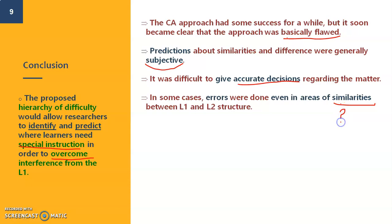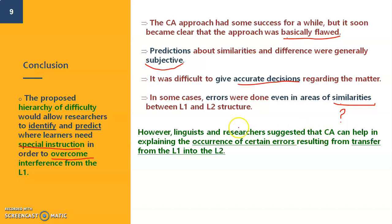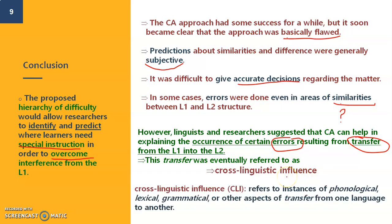However, linguists and researchers suggested that CA actually has an advantage in helping explain the occurrence of certain errors resulting from a transfer from L1 to L2. This transfer, which you have encountered before, was given a different name later: cross-linguistic influence, which means instances, moments of phonological (that is maybe in pronunciation), lexical (the words used), grammatical forms, or other aspects of transfer from one language to another, which we have talked about before as positive or negative transfer. It was later called cross-linguistic influence and interference is part of this.